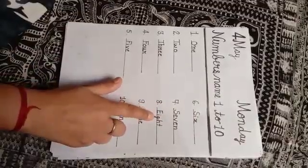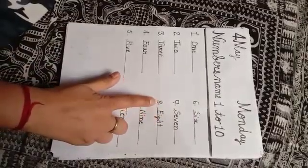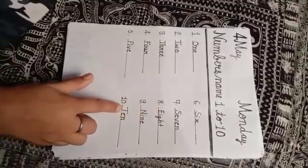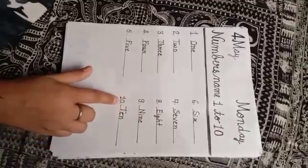Eight. E, I, G, H, T, eight. Nine. N, I, N, E, nine. Ten. T, E, N, ten.